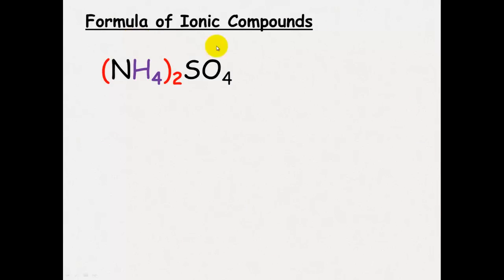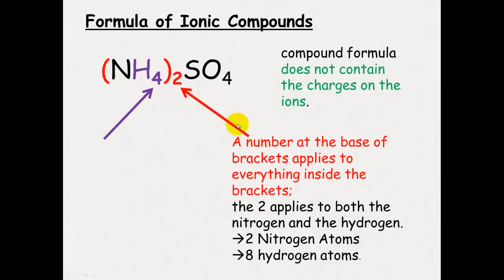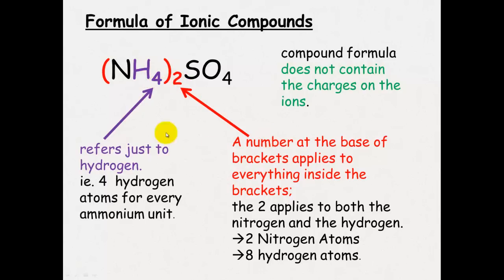As a summary for writing ionic compound formulae: the compound formula doesn't contain any of the charges on the ions, and the overall charge of the compound must be neutral — you don't write the charges in. The subscript number outside brackets applies to everything inside; it all gets multiplied. So a subscript 2 outside brackets applies to both the nitrogen and the hydrogen — giving two nitrogen and eight hydrogen total. The subscript 4 refers to just the hydrogen within each ammonium unit, meaning four hydrogen atoms per ammonium.